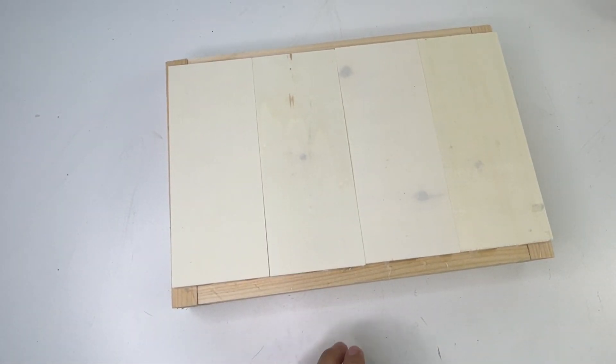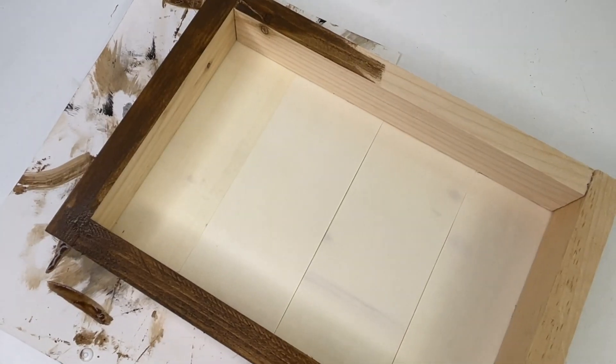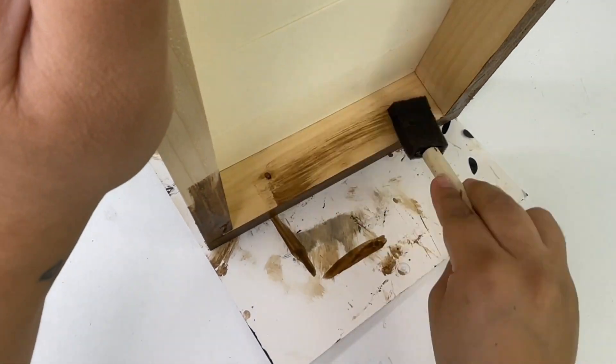You can add small little legs using wood beads. I decided to just leave mine like this. To paint this I'm using the Waverly antique wax.